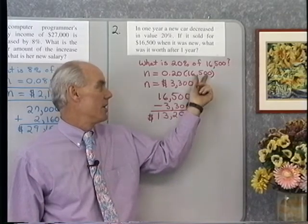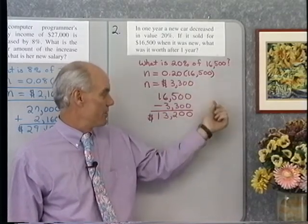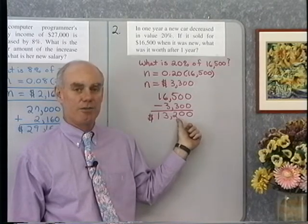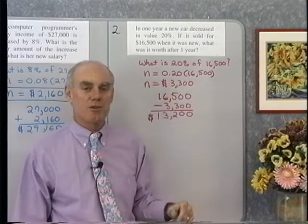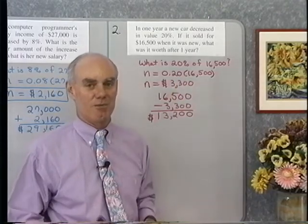16,500. Now another way to do this problem, if we just wanted to find the value of the car after one year, would be to take 80% of this. Because if it decreases in value 20%, then it's only worth 80% of what it was.